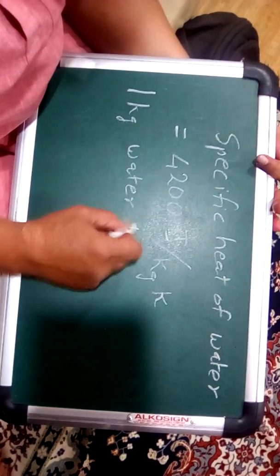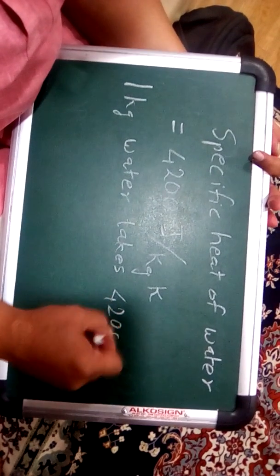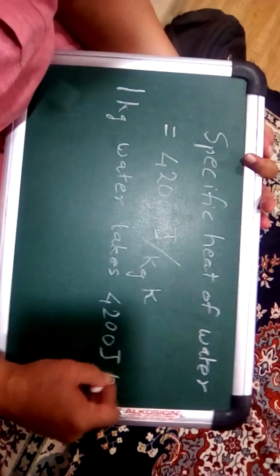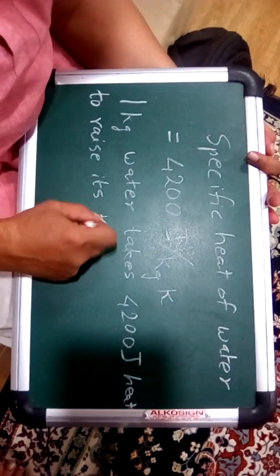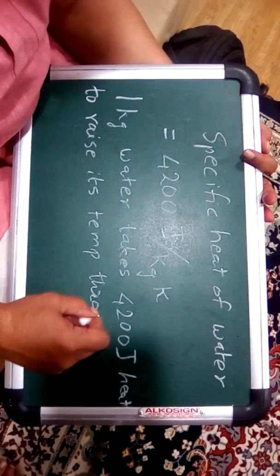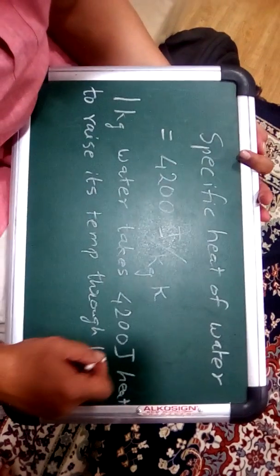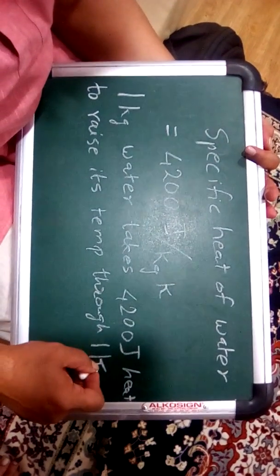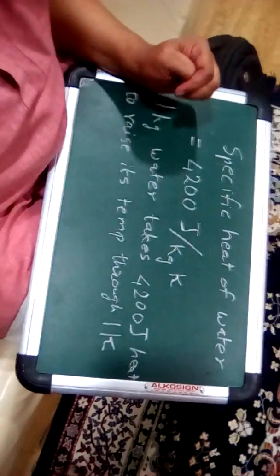Takes 4200 Joules of heat to raise its temperature by 1 degree, 1 Kelvin, or you can say 1 degree Celsius. This is the meaning of specific heat capacity.